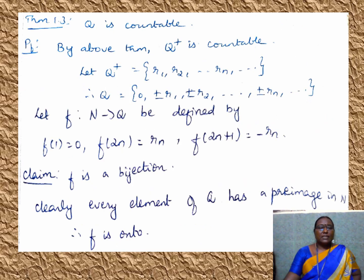Now let us see Theorem 1.3: Q is countable. In the previous theorem, we proved that Q⁺ is countable. In this theorem, we are including 0 and the negative rational numbers to show that Q is countable. We will use the previous theorem. Since Q⁺ is countable, list its elements as r₁, r₂, ..., rₙ, .... Then Q consists of 0 and ±r₁, ±r₂, .... To prove Q is countable, I need to form a bijection from N to Q. We know Q is not finite, so I define the map F: N → Q.